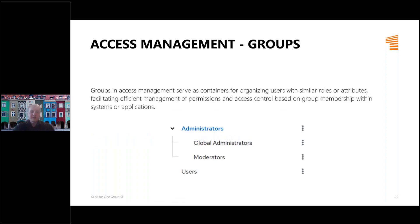You can also organize users with similar roles or attributes into groups, which have a tree structure. For example, an administrators group with child groups for global administrators and moderators. This gives you a lot of control over how to manage and organize users, and it allows you to grant roles and attributes not only to individual users but to the group as a whole, making user management easier.